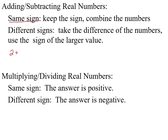So two plus three, they're both positive, so you get five. Or if you add negative two minus three, they're both negative, so we add them together: two plus three makes five, but we carry the minus sign along, giving negative five. If they are different signs, you always subtract them and take the sign of the larger value. So five minus three is two, but three minus five: you still do five minus three to get two, but the bigger number has the negative, so the answer is negative two. For multiplication and division, if they are the same sign, the answer is always positive.